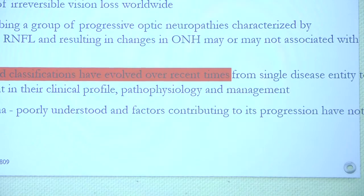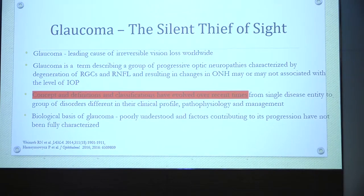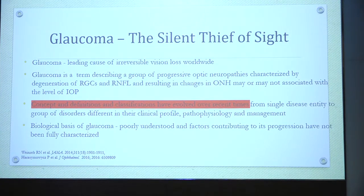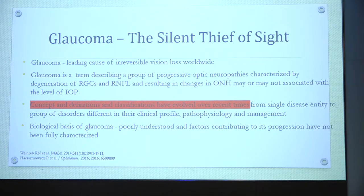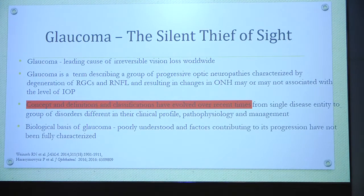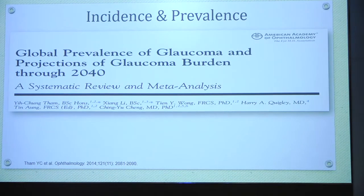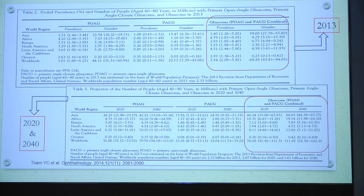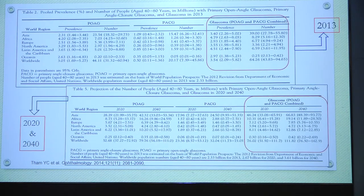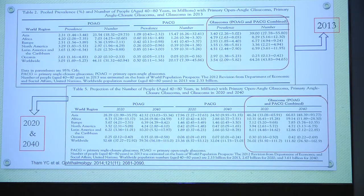Glaucoma, commonly known as the silent thief of sight, is the most common cause of preventable — but irreversible — blindness, and its concepts, definitions, and classifications have been changing and evolving over time. Looking at the projected global prevalence of glaucoma burden through 2040, by the meta-analysis done by Cheng et al., there is a huge increase, especially in Asian countries, from 46.24 to 66.83 million people estimated to suffer from glaucoma.